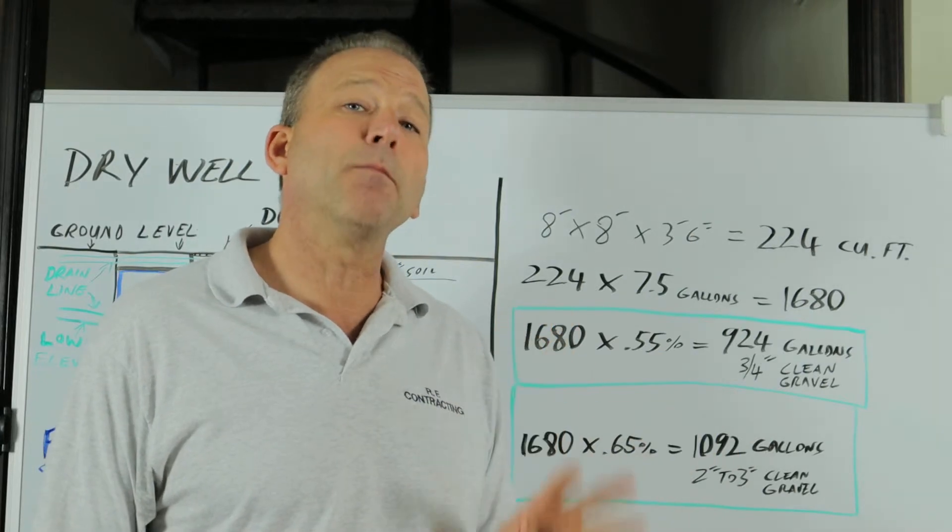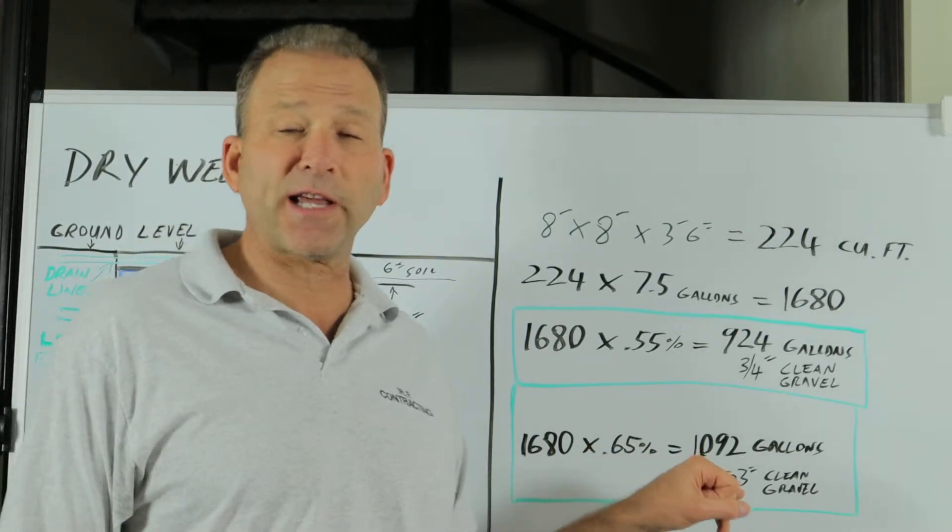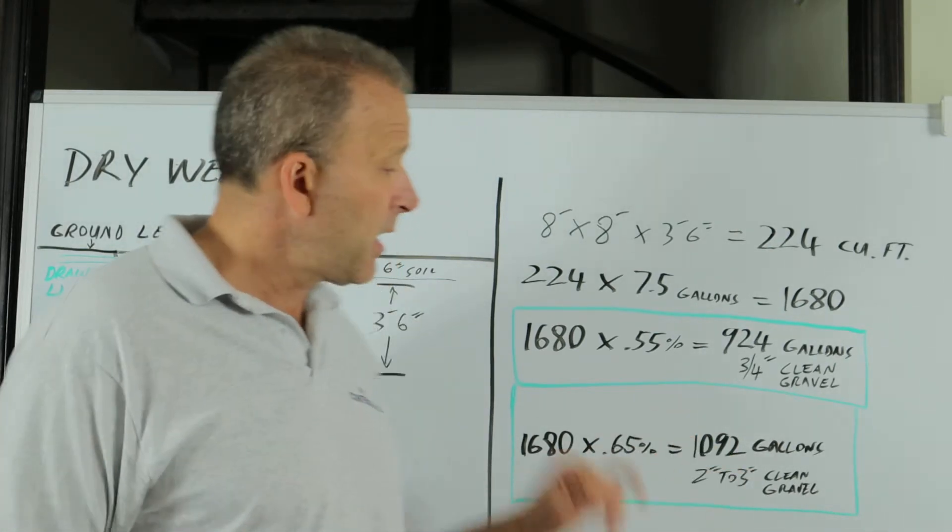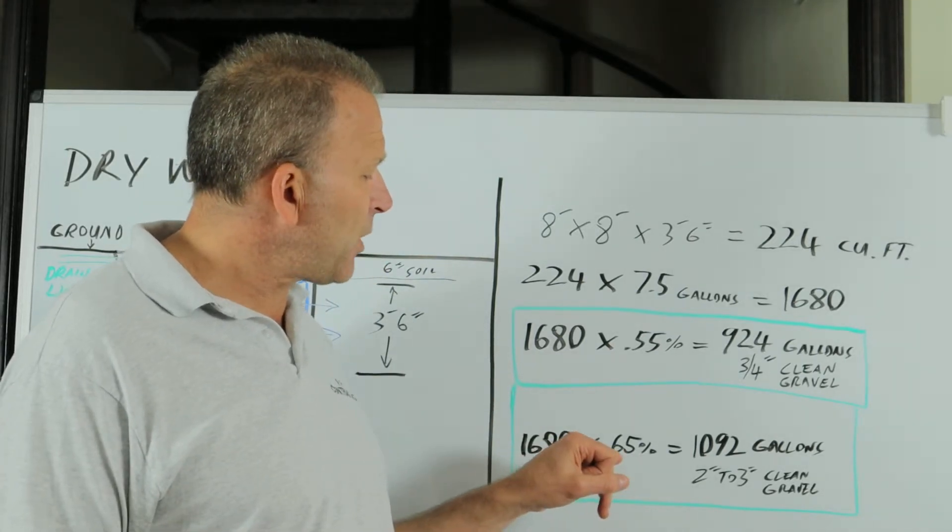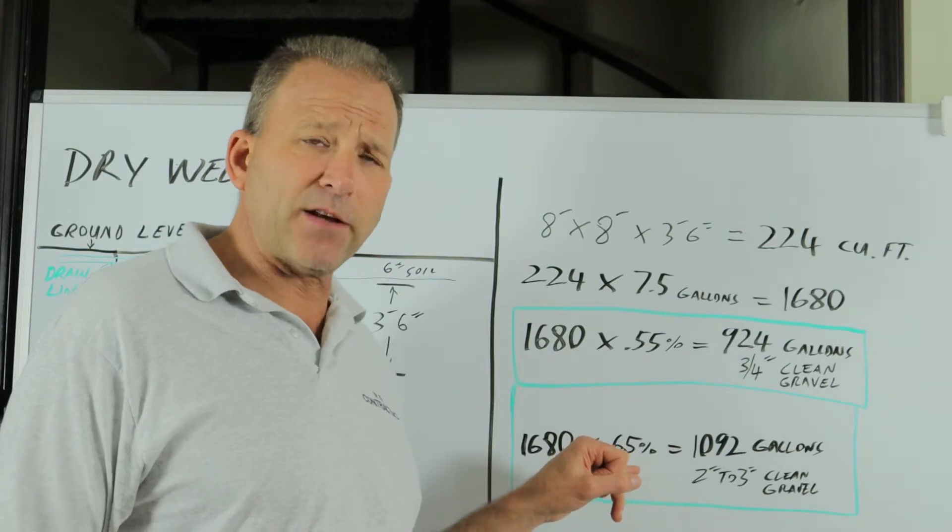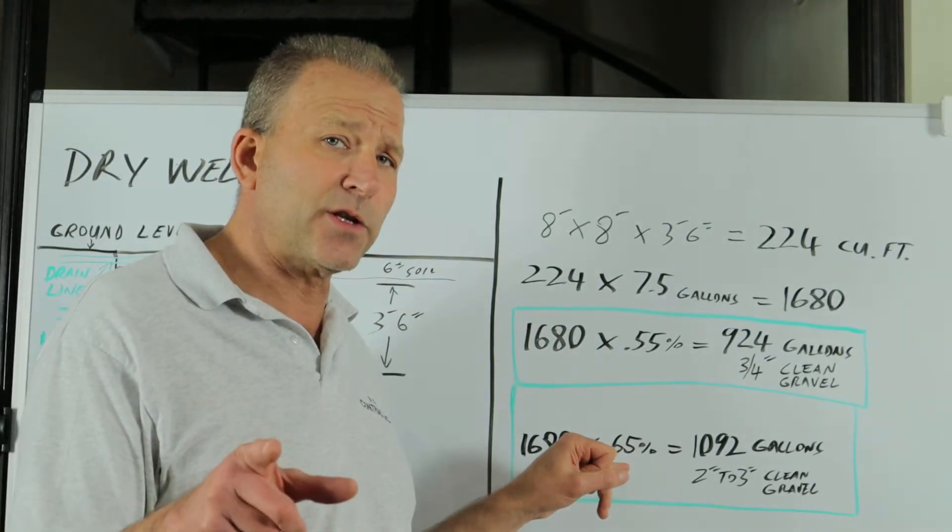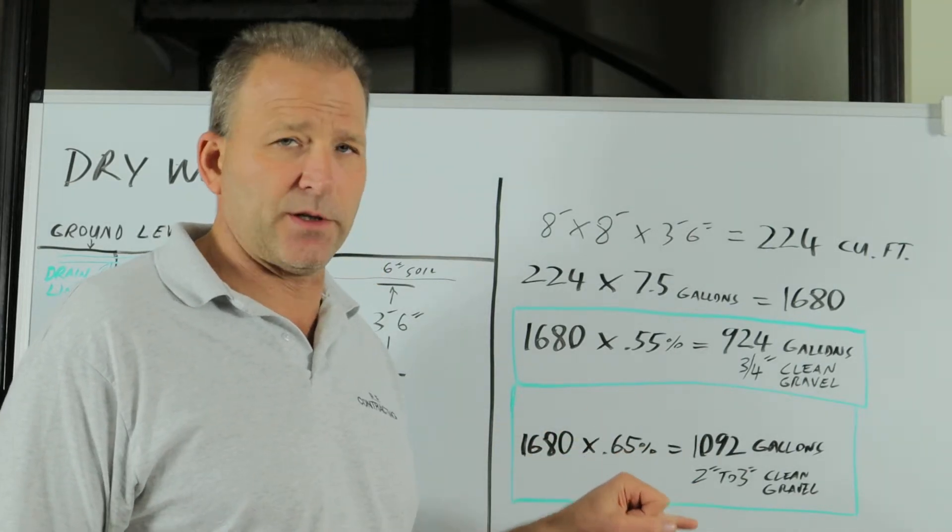You can get more water capacity by using two inch to three inch clean gravel rather than the three-quarter inch clean gravel. The two to three inch gravel will give you 65% water capacity versus the 55% when using the three-quarter inch clean, for 1092 gallons capacity.